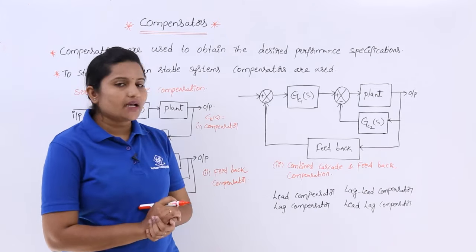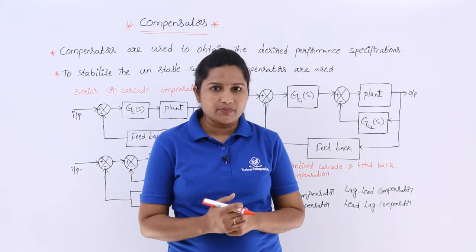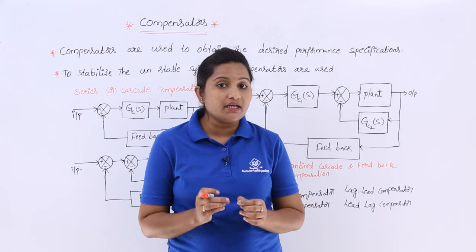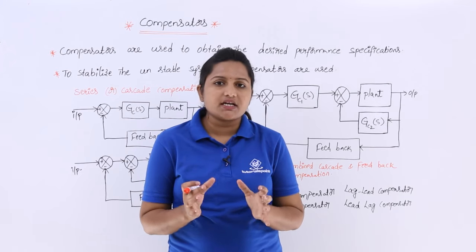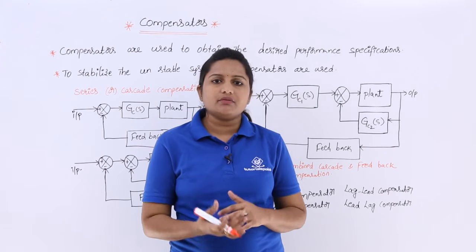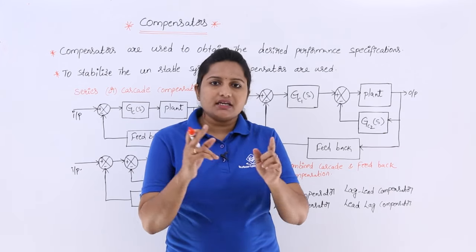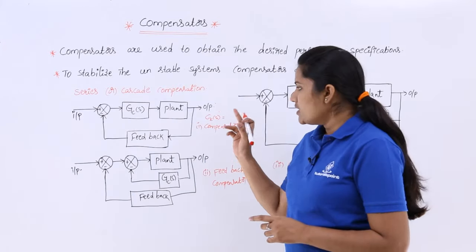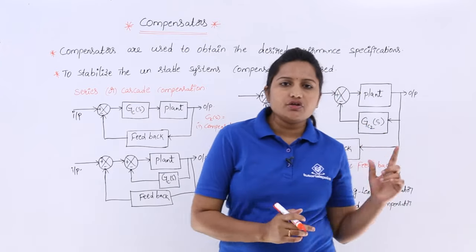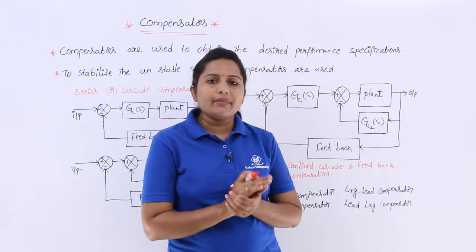So, this is about compensators. Generally, compensators are used to get our desired performance specifications. In control systems especially, system stability is the key performance specification. To stabilize the system, we are going to use these compensators. We can use a compensator in a control system in three ways: in cascade, in feedback, or in both cascade and feedback.